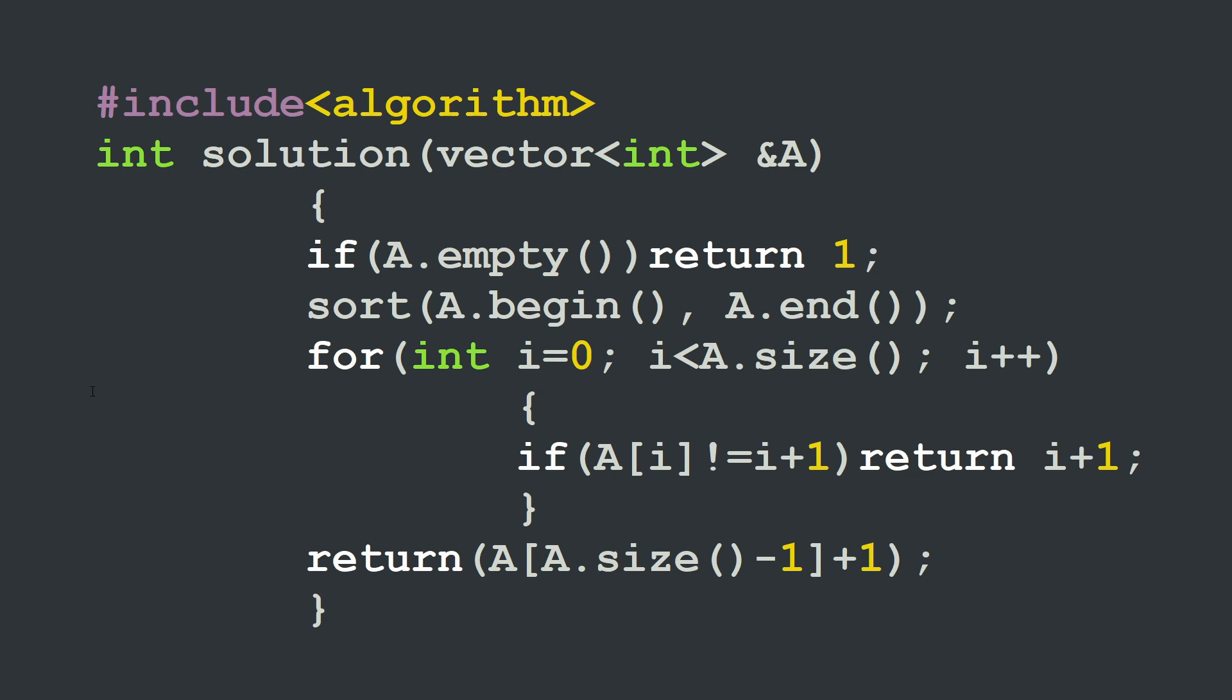Okay now let's see how to write the solution in C++ and in Python. We will start by the C++ solution. We have our function named solution, it takes one parameter the array A and it should return one integer, the value of the missing element.